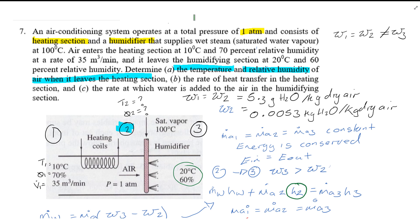Okay looking at part B now of question 7. Rate of heat transfer in the heating section. And a key bit of information we're given here is the rate of air flowing into the heating section is 35 meters cubed per minute.